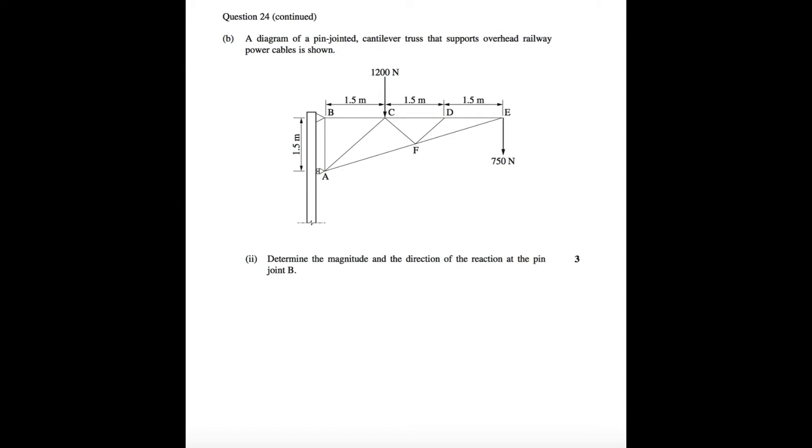Moving on from the last video, we will look at question 24b part 2 from the 2015 HC paper. We will have to determine the magnitude and the direction of the reaction force at pin joint B. So let's begin.